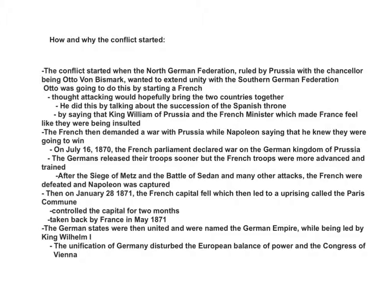On July 16, 1870, the French Parliament declared war on the German Kingdom of Prussia. The Germans released their troops sooner, but the French troops were more advanced and trained. After the siege of Metz and the Battle of Sudan, and many other attacks, the French were defeated and Napoleon was captured.